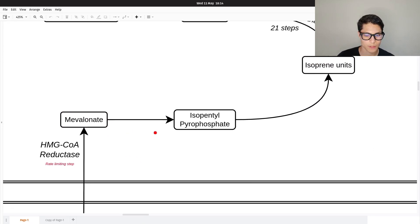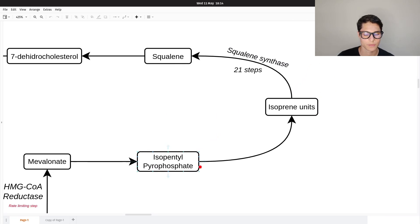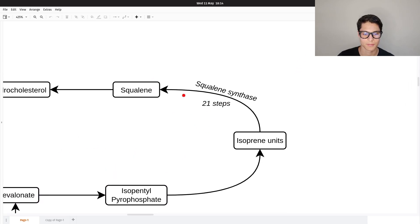Mevalonate is then going to get committed into isopentenyl pyrophosphate. Isopentenyl pyrophosphate is converted into isoprene units. These processes are very complex—there are more reactions than they appear here. As you can see, the squalene is created from the squalene synthase that includes 21 steps, but I'm not going to put them all here.